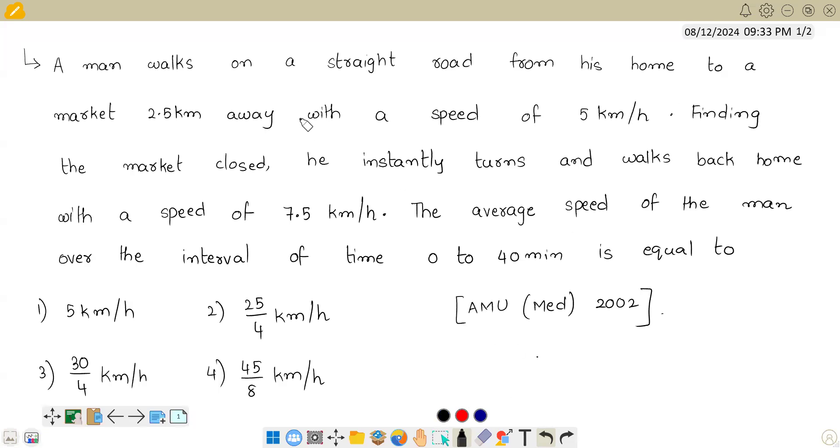Hello student, the question says: A man walks on a straight road from his home to a market 2.5 km away with a speed of 5 km per hour. Finding the market closed, he instantly turns and walks back home with a speed of 7.5 km per hour.